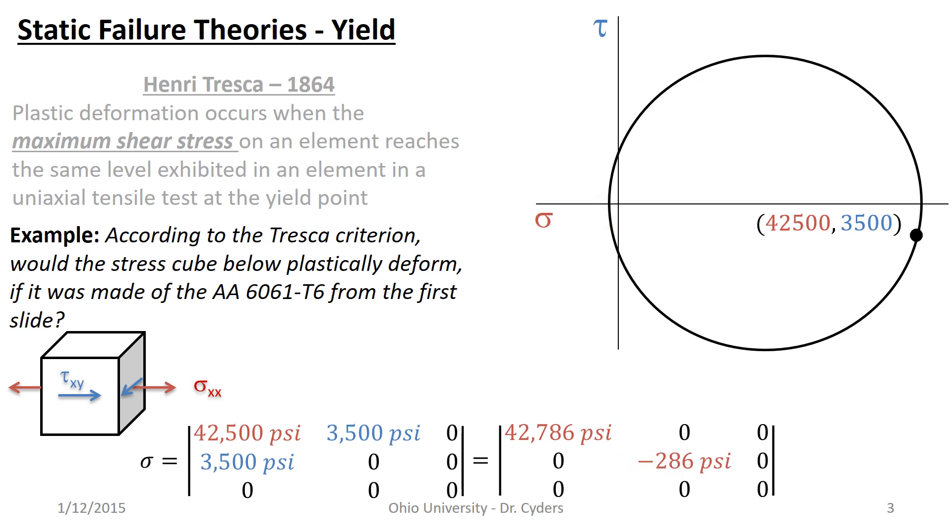So Tresca says the maximal shear stress from this Mohr's circle, or the radius here, is what matters, and we can calculate that and find that it's going to be equal to 42,786 plus 286 over 2, and that's 21,536. If you recall from the first slide, our maximal shear stress shown was 21,500 at yield, this is greater than that. Therefore, Tresca would predict that, yes, this will cause yielding.